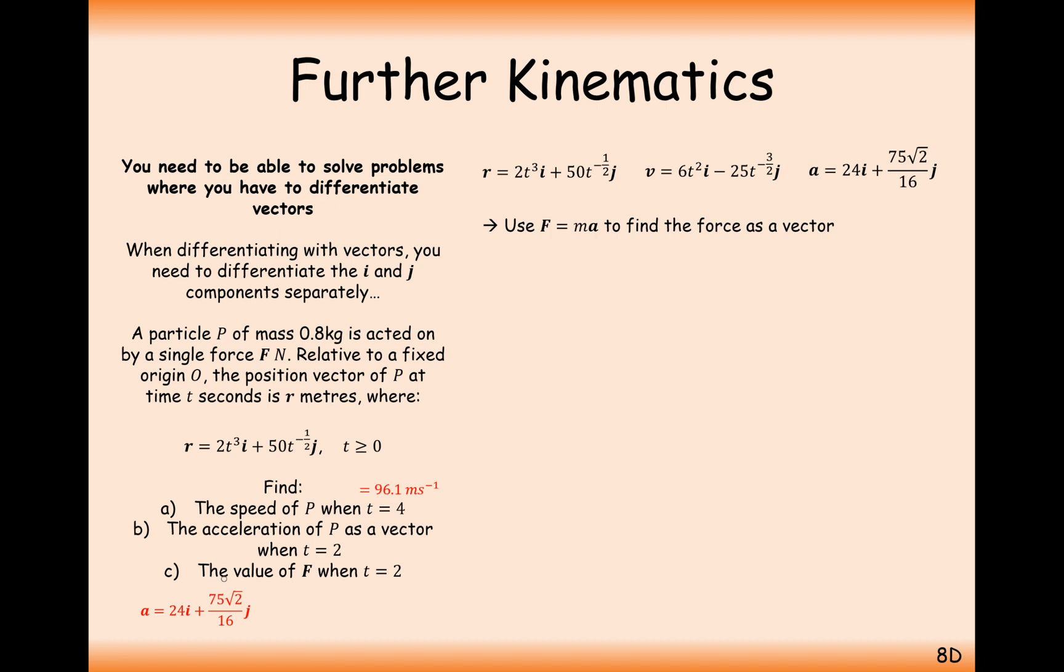For the final part here, in part c, we want to find the value of f when t is equal to 2. And we're going to use vectors here. We're going to have f as a vector, a as a vector, and m will just be a numerical value. That's the mass of 0.8 kilograms. So substituting the value in, we want to work out f, so leave that alone. m is 0.8. We worked out the acceleration when t equals 2 was this thing here. Multiply out the brackets. And you get 19.2i plus 15 root 2 all over 4 newtons. So that's the force there. We've got 19.2 acting to the right. And we've got 15 root 2 over 4 acting in the j component.